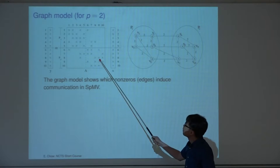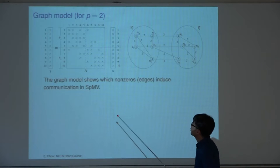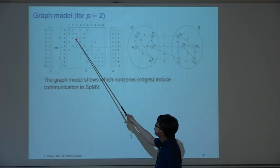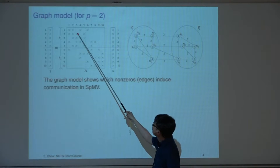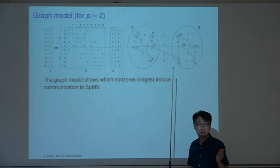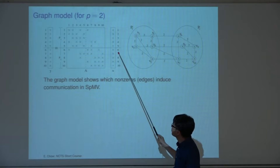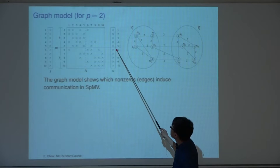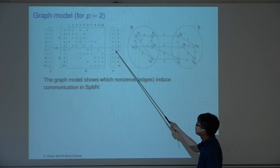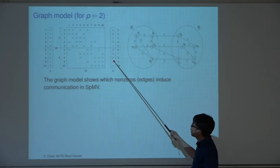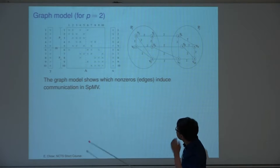Here's a sparse matrix for the p=2 case — two partitions. A11 is the local part, and y1 can be computed as the local part without any communication. But the off-diagonal part times x2 needs communication because those portions of x — components 6, 7, and 8 — are not stored on processor 1. The fact that these need to be communicated is exactly due to the non-zeros in the off-diagonal block, and this is a symmetric problem.